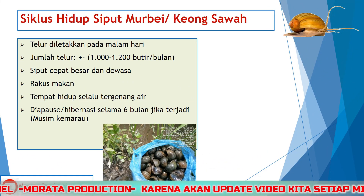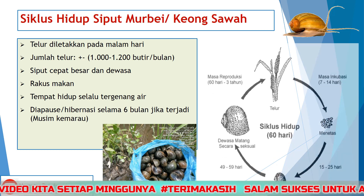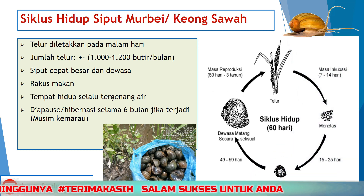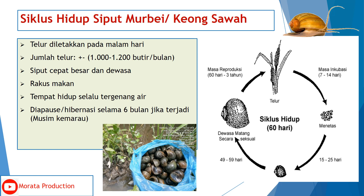Siklus hidup Siput Murbei atau Keong Sawah: pertama, telur diletakkan pada malam hari; kedua, jumlah telur kurang lebih 1000 sampai 1200 butir per bulan; ketiga, siput cepat besar dan dewasa; keempat, siput ini rakus makan; kelima, tempat hidup selalu tergenang; dan keenam, mampu hibernasi atau diapause selama 6 bulan jika terjadi musim kemarau.